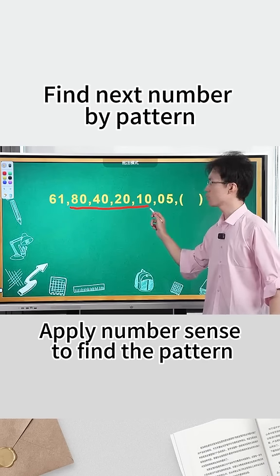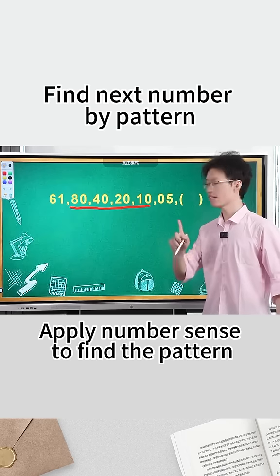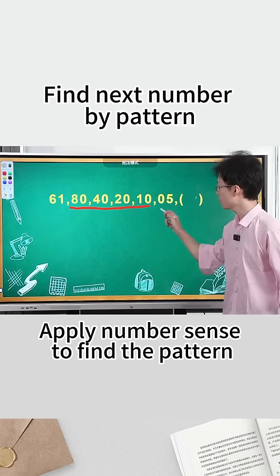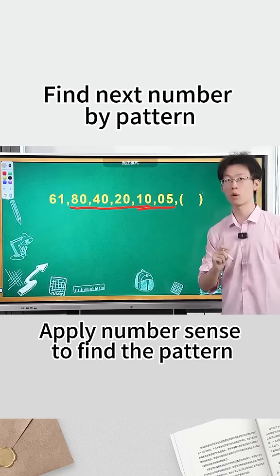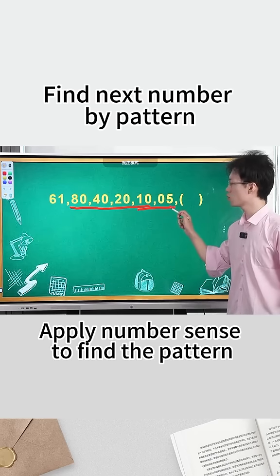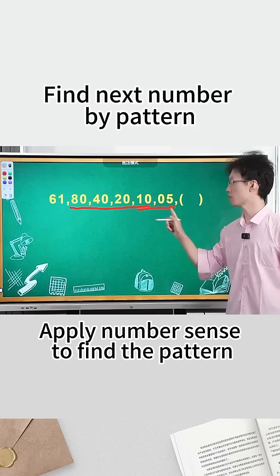We notice that from here on, each number is divided by 2, right? It's a very obvious pattern, dividing by 2. Even here, from 10 to 0.5, it's also divided by 2. But one thing we need to pay attention to is that this 5 is written as 0.5, not just 5.